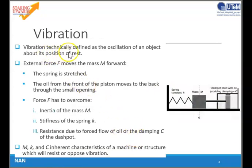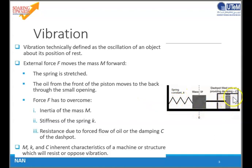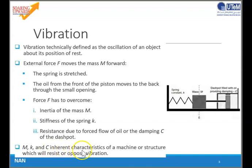Vibration is technically defined as the oscillation of an object about its position at rest. As you can see from this diagram, the external force F moves the mass forward, and the spring is stretched, so the oil from the front of the piston will move to the back through the small opening. The force F has to overcome the inertia of the mass M, the stiffness of the spring K, and resistance due to oil flow, or the damping C of the dashpot. M, K, and C are inherent characteristics of a machine or structure which will resist imposed vibration.